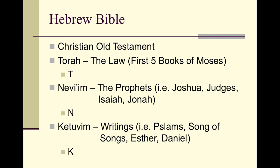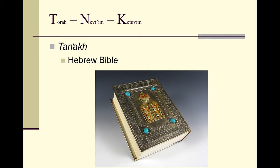These include books like Joshua, Judges, Isaiah, and Jonah — writings of the prophets. Then you have the Ketuvim, which are various writings within the Scriptures that are not necessarily prophetic writings or legal writings, but writings such as the Psalms, Proverbs, Song of Songs, Esther, and Daniel — more devotional writings that make up part of the Scriptures. T for Torah, N for Nevi'im, and K for Ketuvim gives you the acronym TNK — which is basically the Hebrew name for the Bible, the Tanakh.